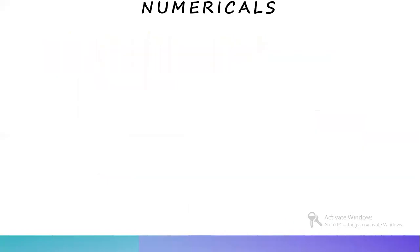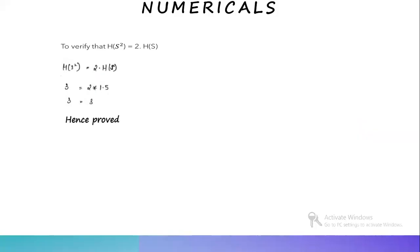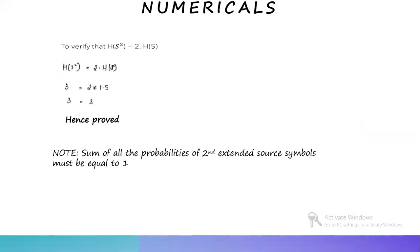To verify: H of S squared equals 2 times H of S. Substituting the values, H of S squared is 3 bits per symbol and H of S is 1.5 bits per symbol, so 3 equals 2 times 1.5 equals 3. Hence proved. Note that the sum of all probabilities of the second extended source symbols must also equal 1.